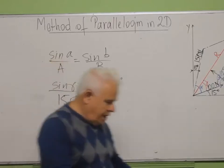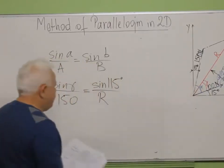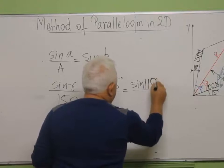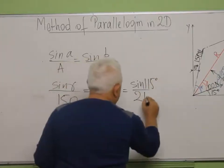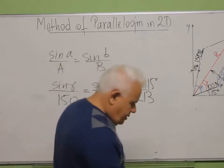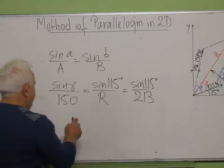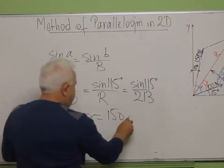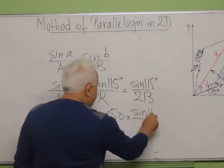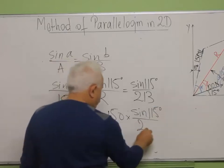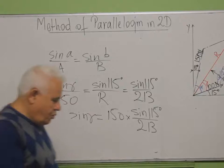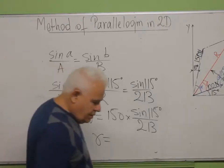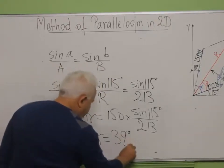R was calculated before and equals 213 newtons. So sine gamma equals 150 times sine 115, divided by 213. You put this into the calculator and you find gamma equals 39.8 degrees.